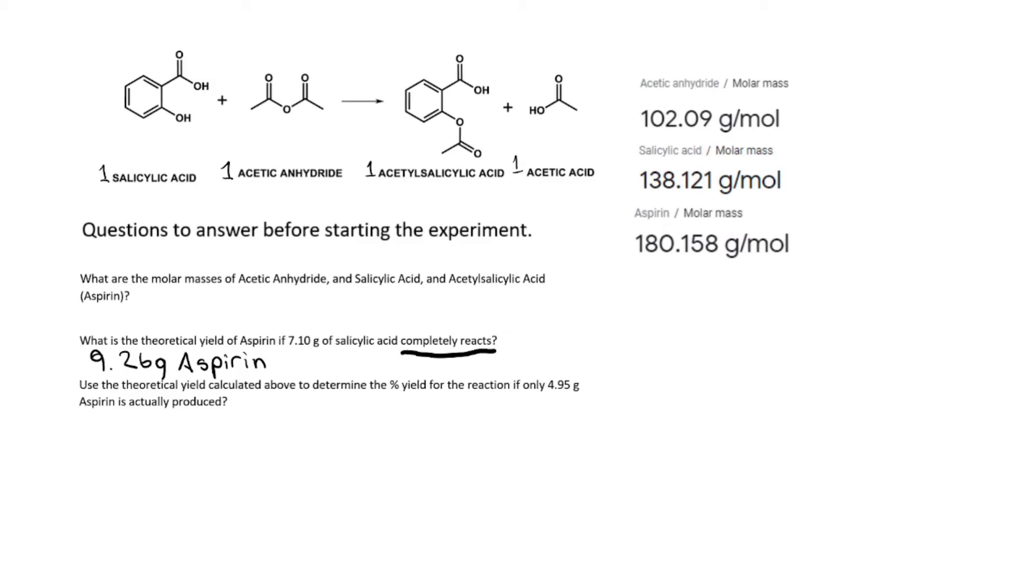Let's look at the last question: Use the theoretical yield calculated above to determine the percent yield if only 4.95 grams of aspirin is actually produced. The equation for percent yield is a ratio between actual yield and theoretical yield, multiplied by 100.